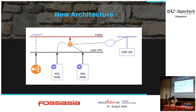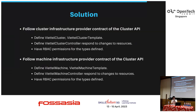Now let's look at the new network model. VMs of the user cluster are plugged into the user VPC. For all requests going out to the internet or connecting to the CMP API, they go through a router. We still use a load balancer to load balance the API server of the master node. To build the custom Cluster API Provider VTEL, we follow the cluster infrastructure provider contract and the machine infrastructure provider contract of the Cluster API.